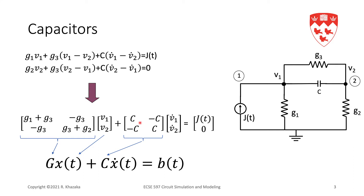You've probably guessed what the capacitor stamp is going to look like. Let's first look at the resistor stamp as an example. On the right-hand side we have the B vector. The resistor stamp is G3, −G3, −G3, G3 — that's the stamp for resistor G3. It appears in the G matrix, and this is consistent with what we've seen before when presenting the resistor stamp.